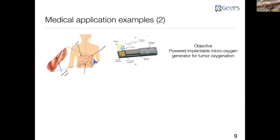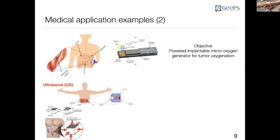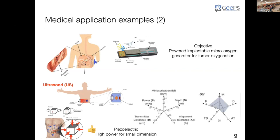Another solution aims to provide an implanted micro oxygen generator for tumor oxygenation. The solution is to use ultrasound: implant a piezoelectric element inside the body and send acoustic sound. The piezoelectric is a good solution because it offers high power for small dimensions. However, for miniaturization it is acceptable, power is acceptable, but transmission distance is not acceptable.